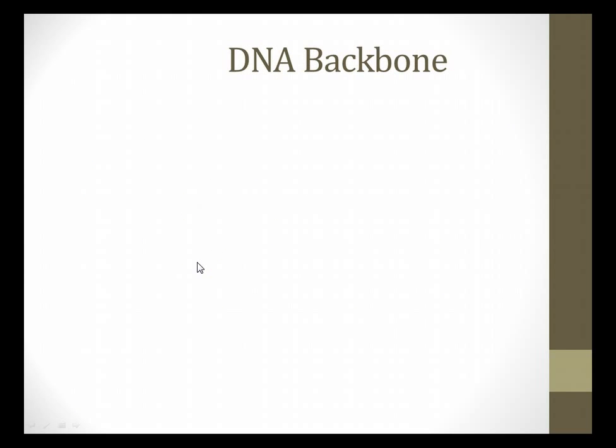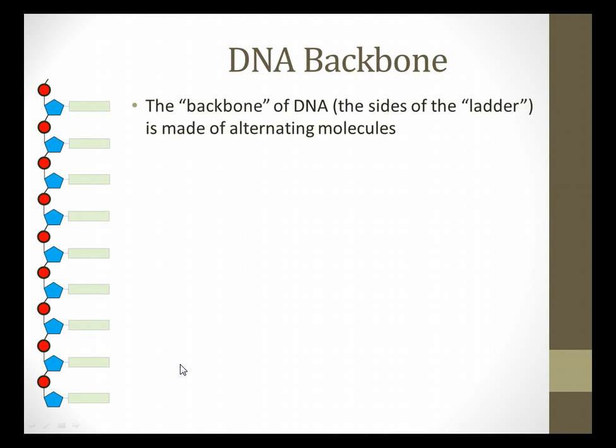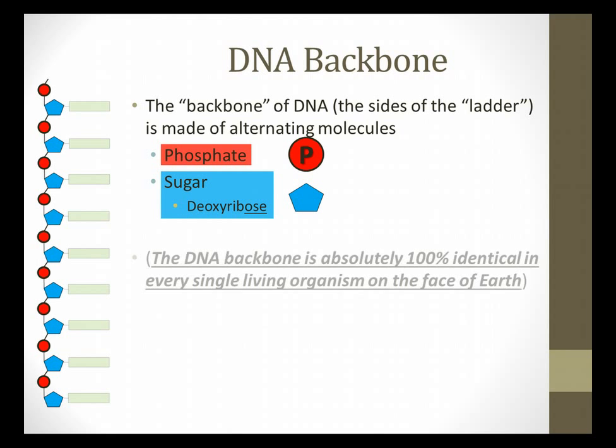So let's talk about that backbone, that spine of DNA. The backbone of DNA, the sides of the ladder, are made of alternating molecules of phosphate, which maybe you remember from ATP back when we were talking about our cell energy, and sugar, and it's a specific sugar, it's a five-carbon sugar, called deoxyribose. It should tell you that it's a sugar by the fact that it's OSE. So I'll be representing the phosphate for the rest of this as red, and the deoxyribose, the sugar, as blue.